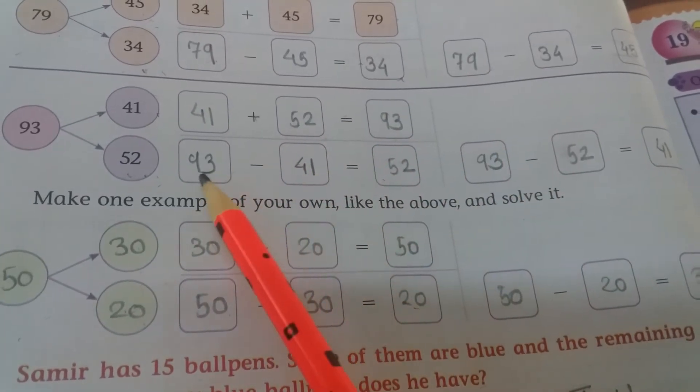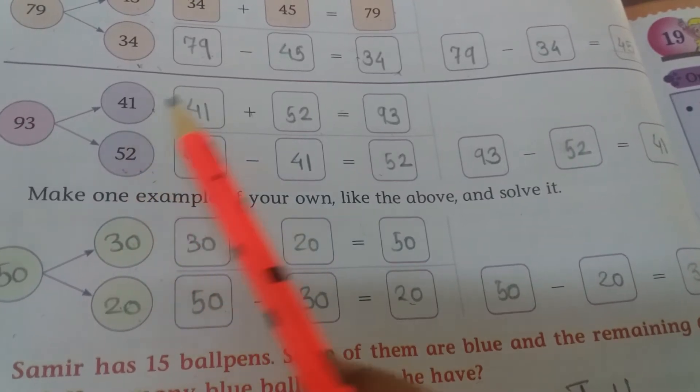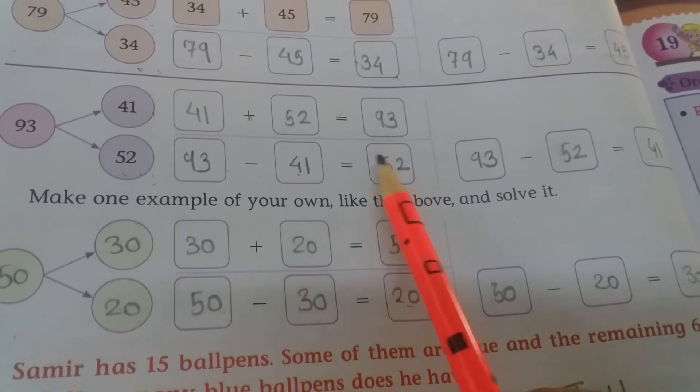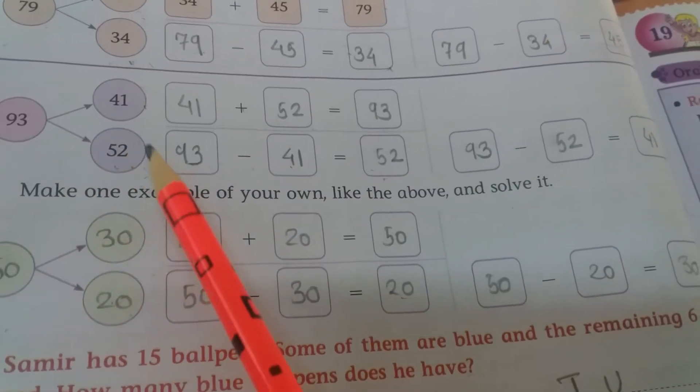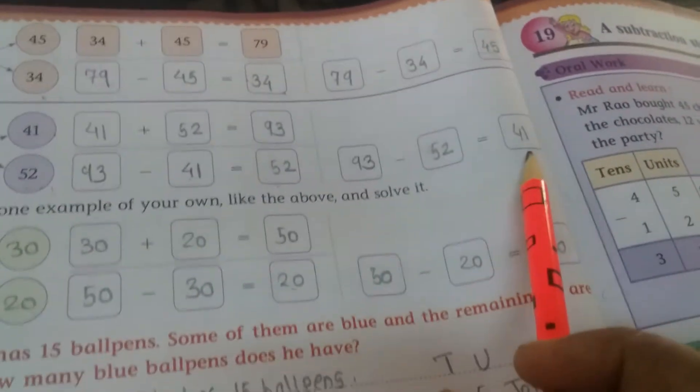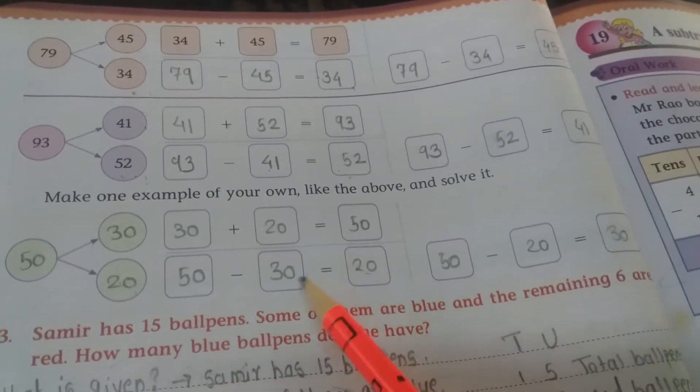Now make the subtraction example. 93 minus 41, 93 minus 41, here answer will come 52. Now children, see 93 minus 52, then answer will come here 41. See children, like that way.